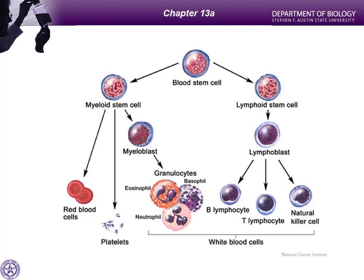In summary, our formed elements include erythrocytes, platelets, the three granulocytes — neutrophils, eosinophils, basophils — and the lymphoid lineage. We also include macrophages, which come from monocytes. When we get to the immune system chapter, we'll distinguish between B lymphocytes that produce antibodies and T lymphocytes that directly attack pathogens.